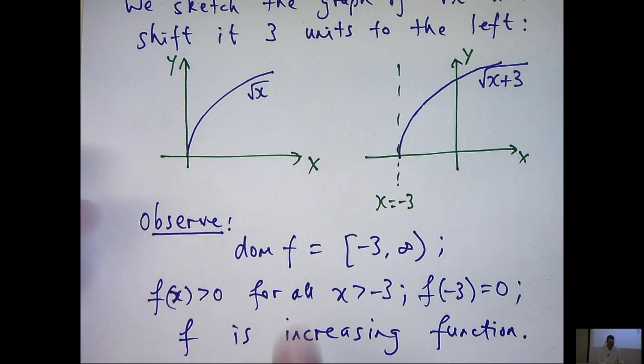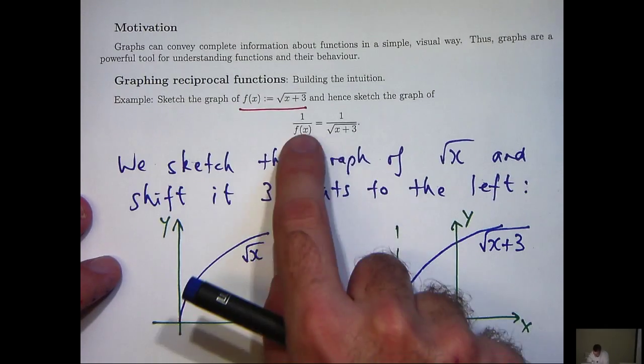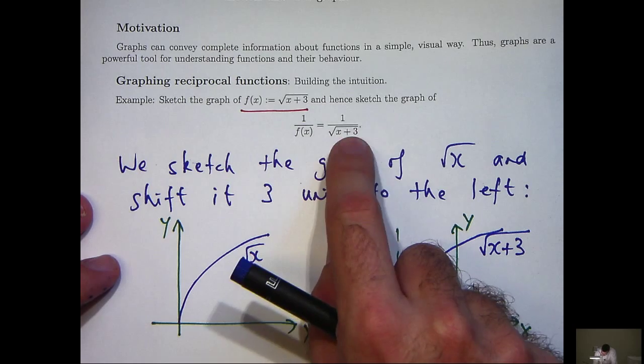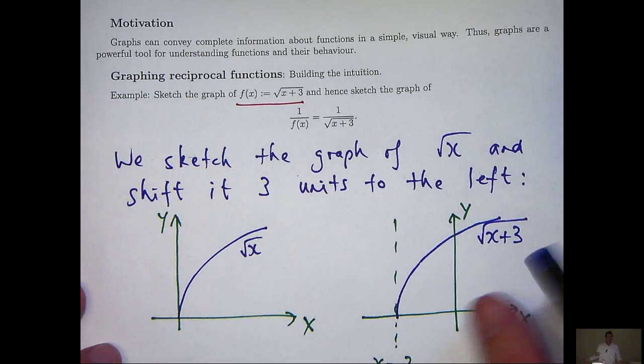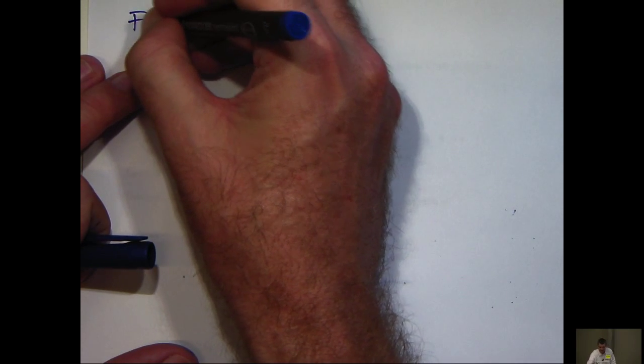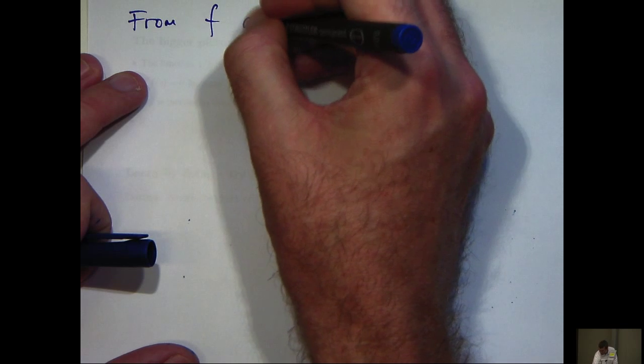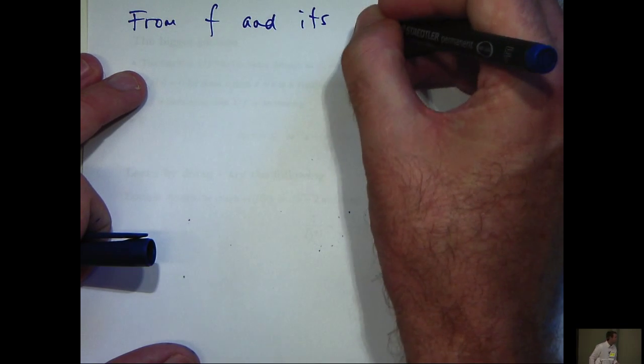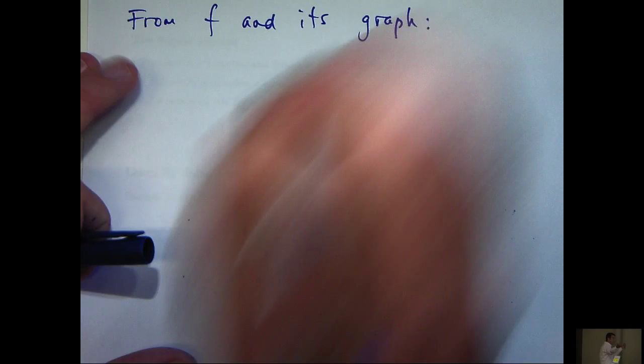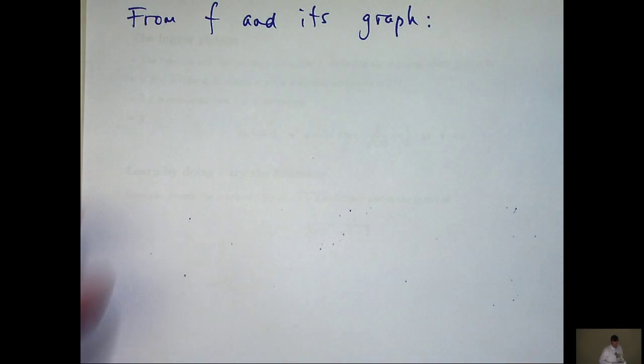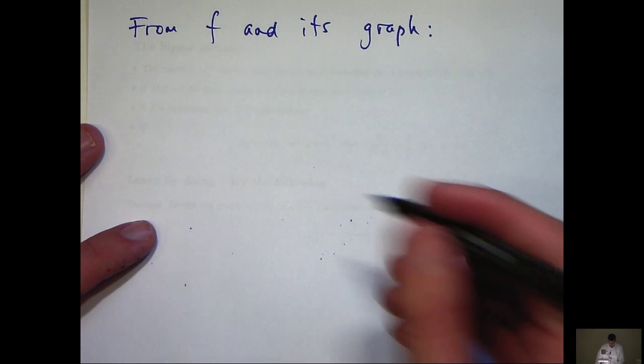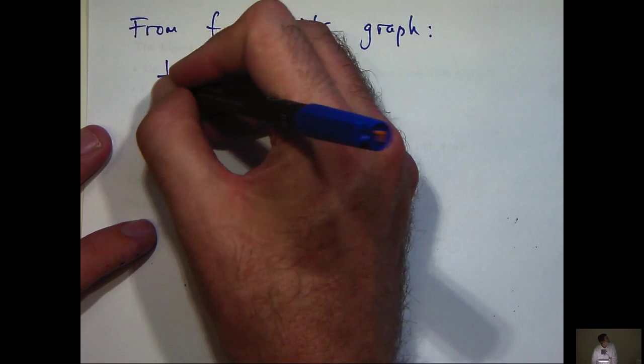Okay, let's use this information to sketch the graph of this reciprocal function. And we can do that in a number of ways. So from f and its graph, let's make some observations about what the graph of 1 on f would look like.